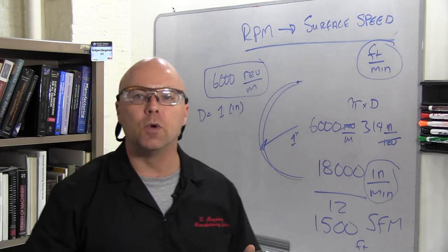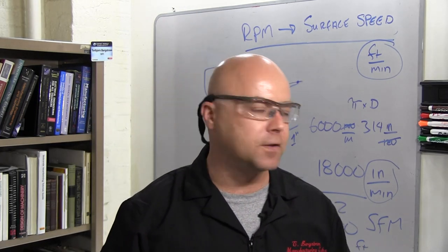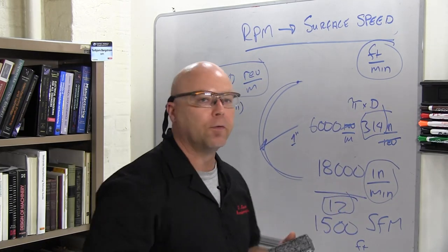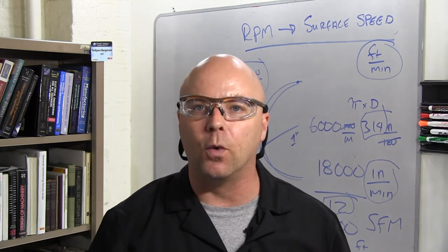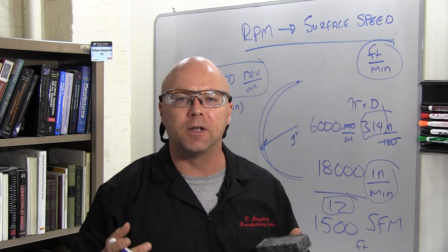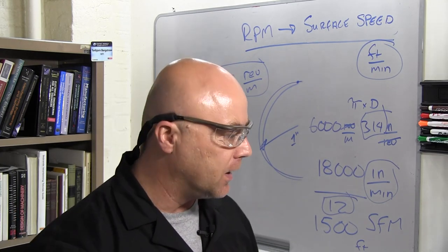Now if you Google this, or you look up on the internet, you'll see that there are formulas where they've combined the 3.14 and the 12, and they tell you to multiply by 4, divide by 4, things like that. You can use one of those formulas, but you should really only use it if you understand the rationale for that formula.